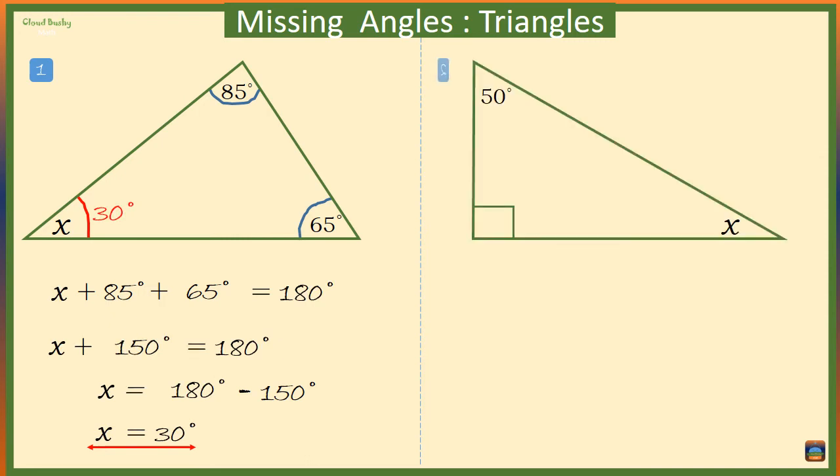Example 2: we have here a right-angled triangle. That means one of the angles in this triangle is 90 degrees. Another one here is given as 50 degrees. We want to find the size of the third angle which is marked with an x.